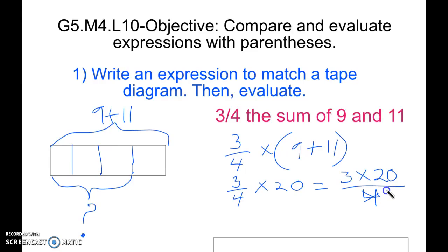We simplify. We have 4 divided by 4 equals 1, 20 divided by 4 equals 5. So 3 times 5 equals 15 over 1, giving us a final answer of 15.